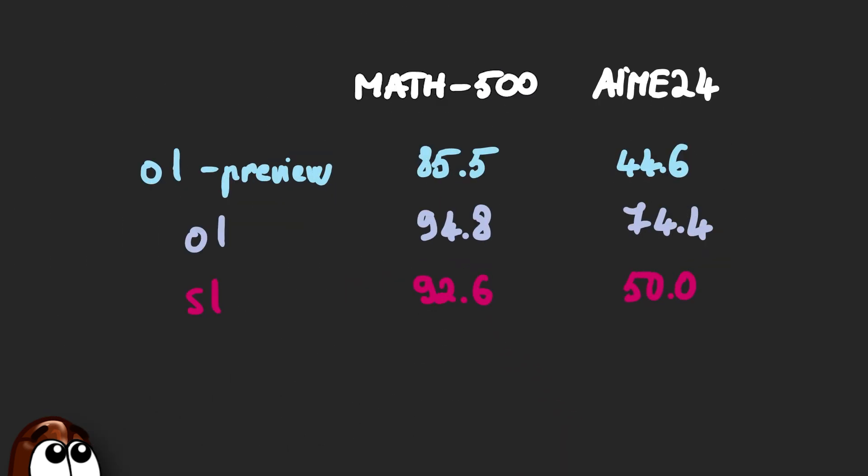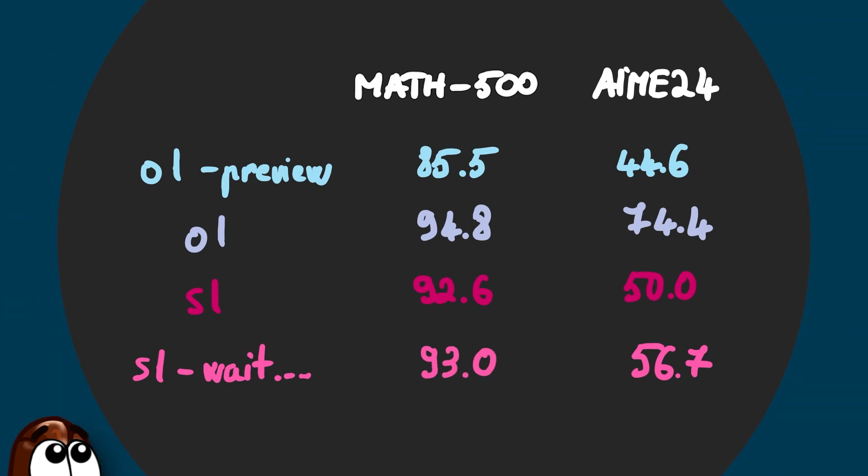This budget forcing method significantly boosted S1's reasoning accuracy. On AMC24, accuracy jumped from 50 to 56.7% with budget forcing. On the MATH 500 dataset, accuracy improved slightly from 92.6 to 93. Remember "let's think step by step"? That prompt could start the reasoning chain, back then called chain of thought. And "wait" is a new trick that keeps the reasoning chain going.